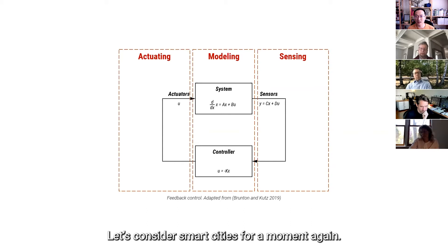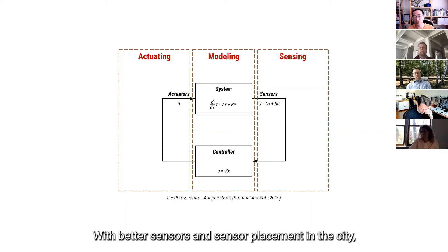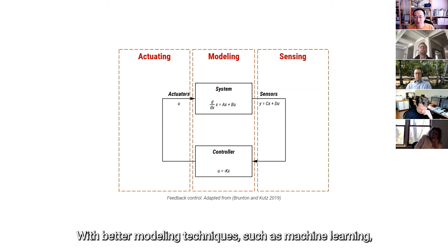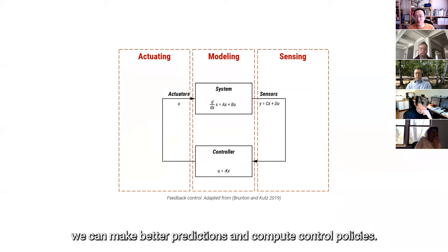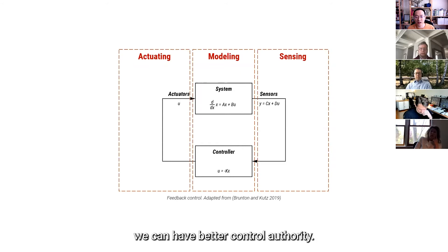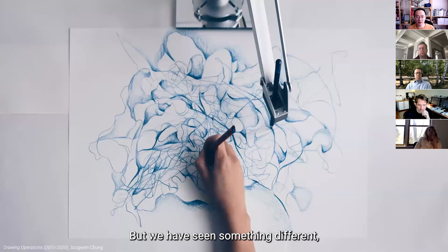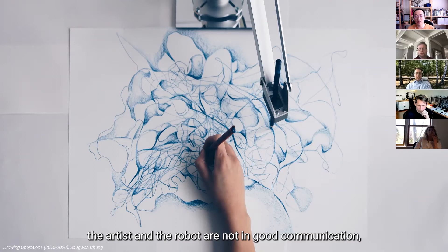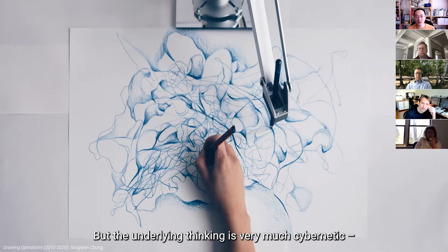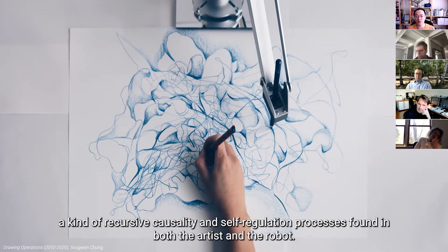And maybe let's consider a smart city for a moment again. And a mainstream logic goes like this. So with better sensors and better sensor placement in the city, we can better understand the urban system. And with better modeling techniques, such as machine learning, we can make better predictions and compute control policies. And with more powerful and effective actuators in the system, we can have better control authority. So, but we have seen something different here. And as we saw in Sugwen's drawing duet, the artist and the robot are not in good communication. There is no control whatsoever. But the underlying thinking is very much cybernetic. This kind of recursive causality and self-regulation processes found in both artist and the robot.